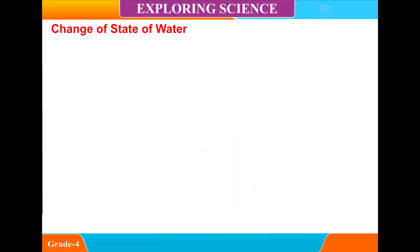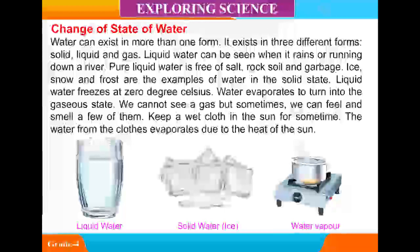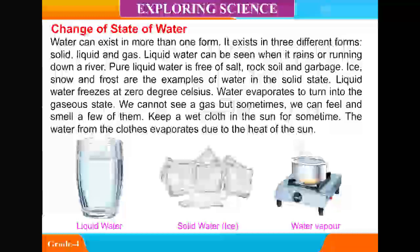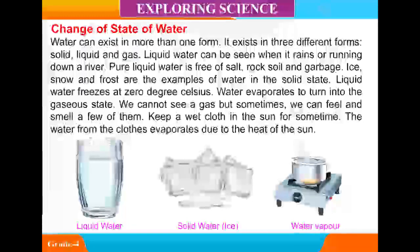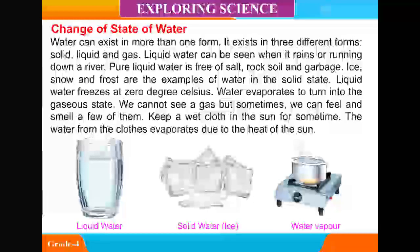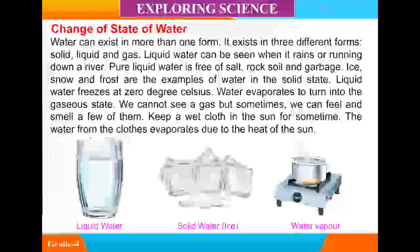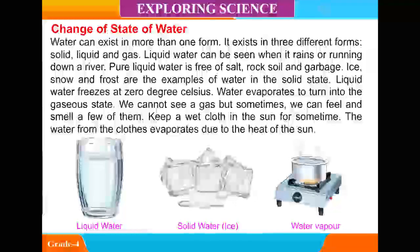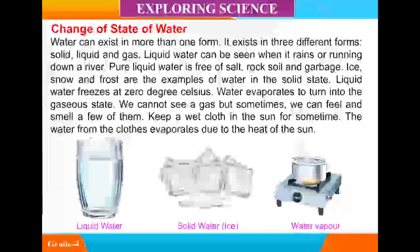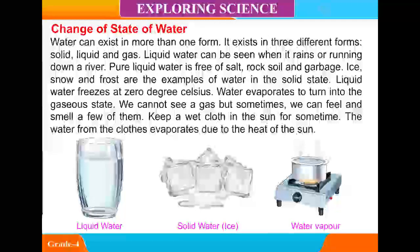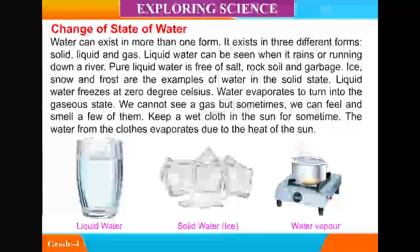Change of state of water. Water can exist in more than one form. It exists in three different forms: solid, liquid and gas. Liquid water can be seen when it rains or running down a river. Pure liquid water is free of salt, rock, soil and garbage. Ice, snow and frost are examples of water in the solid state. Liquid water freezes at zero degrees Celsius. Water evaporates to turn into the gaseous state. We cannot see a gas but sometimes we can feel and smell a few of them.